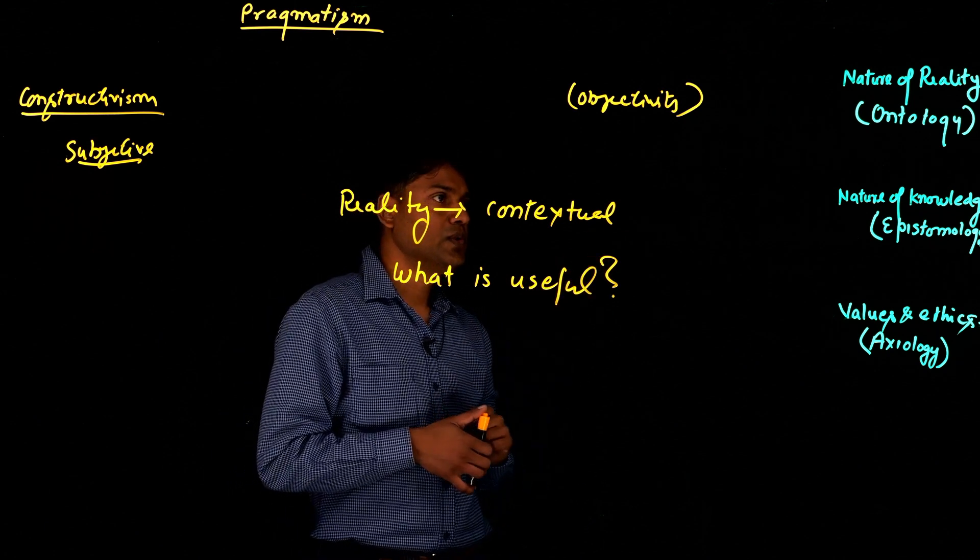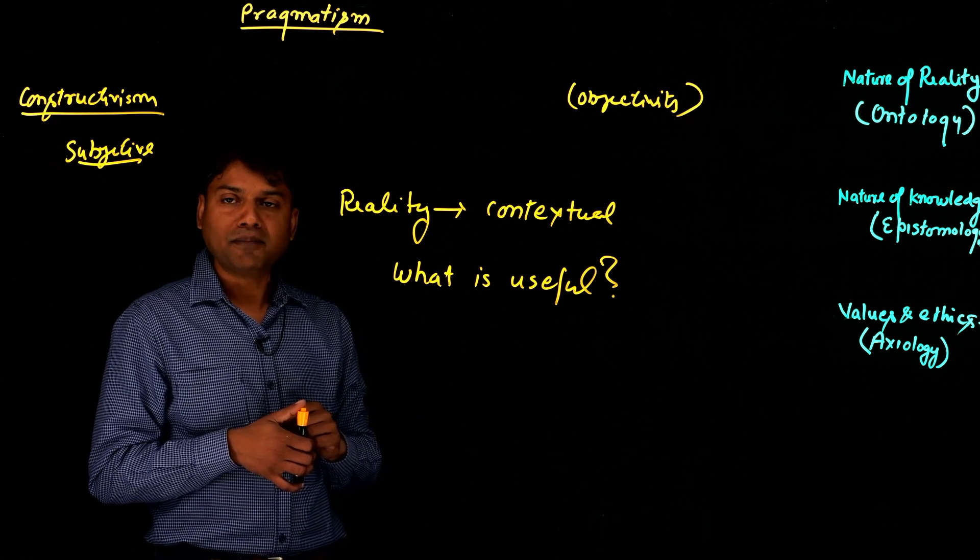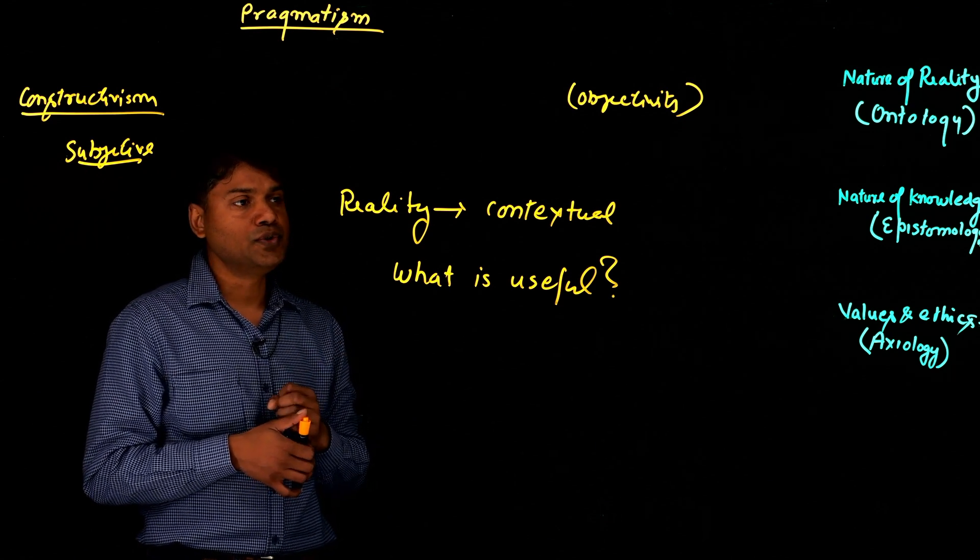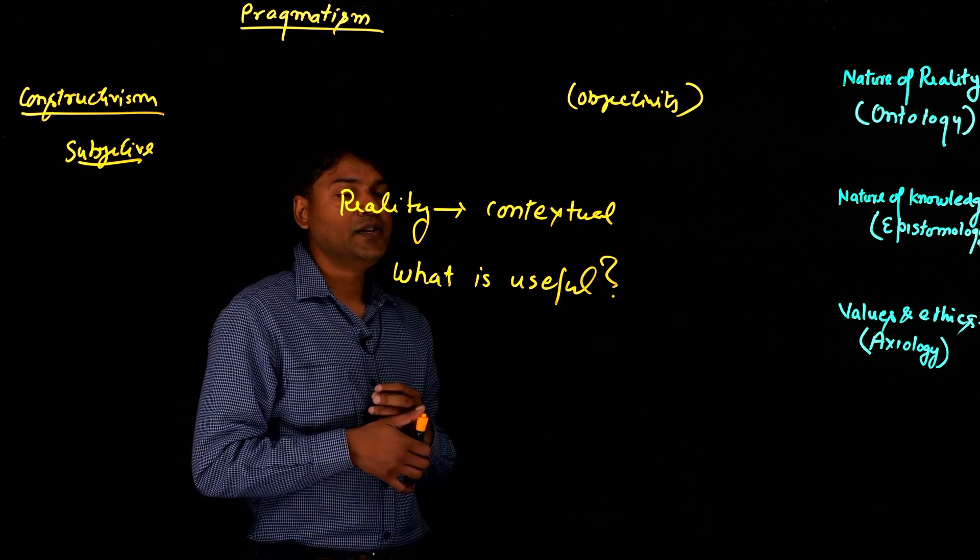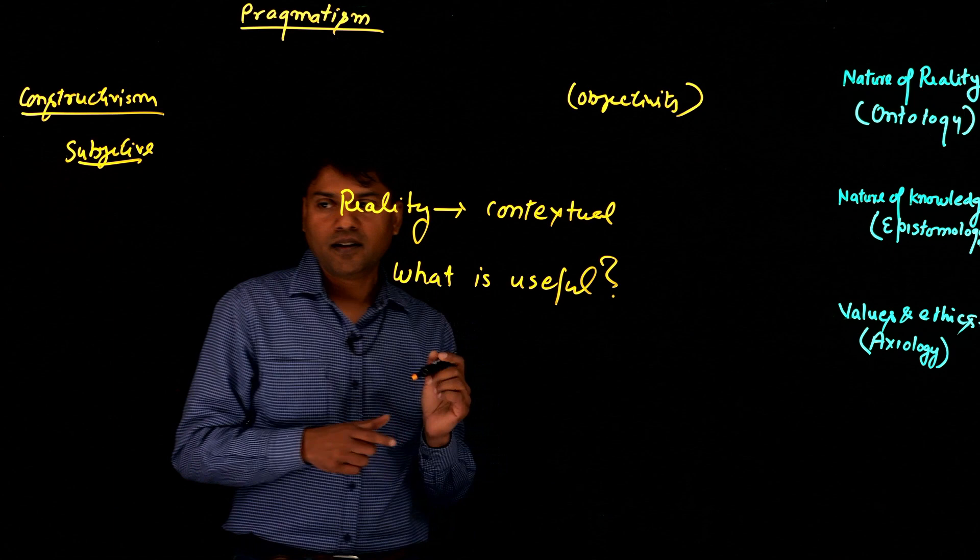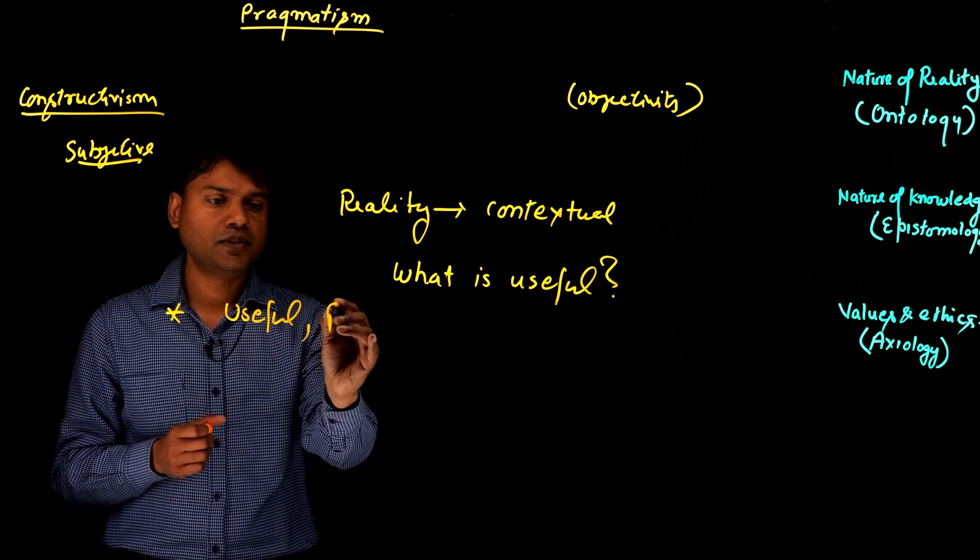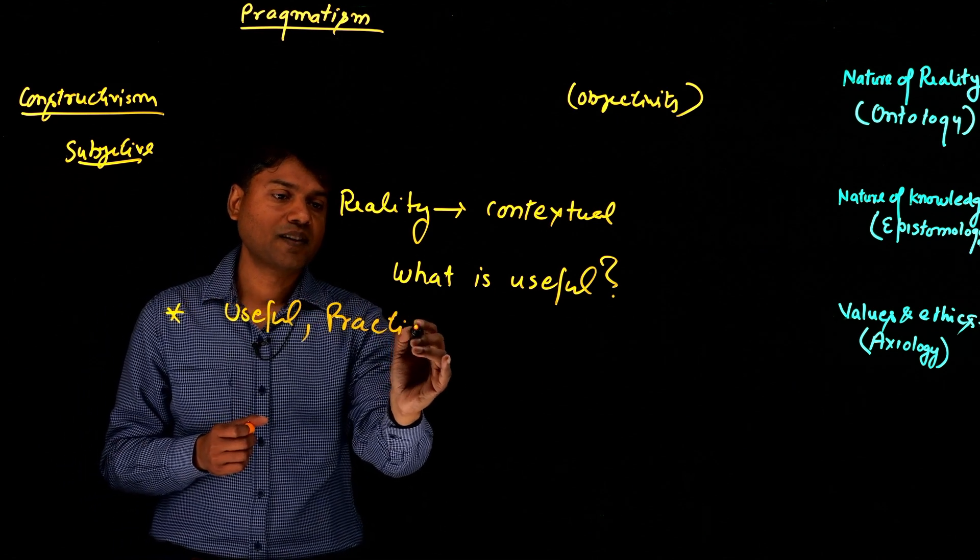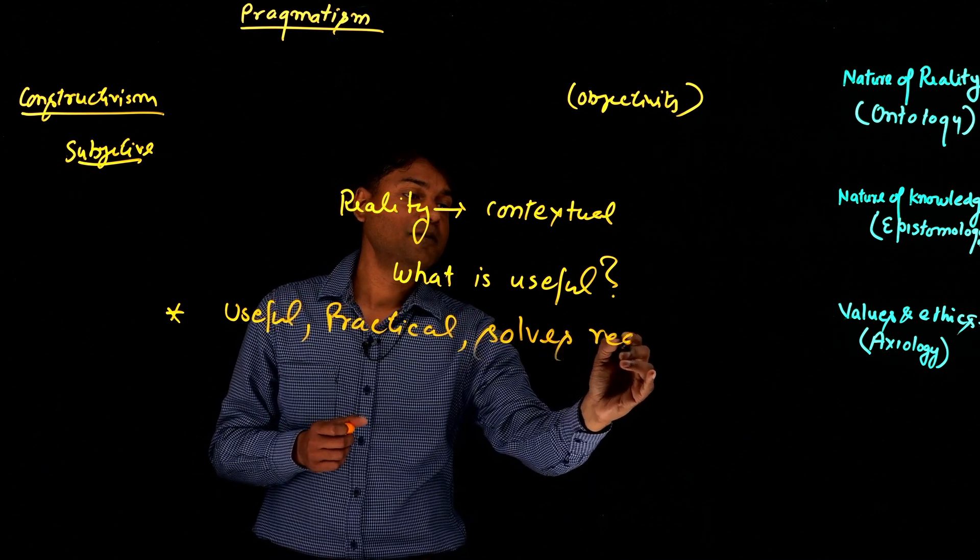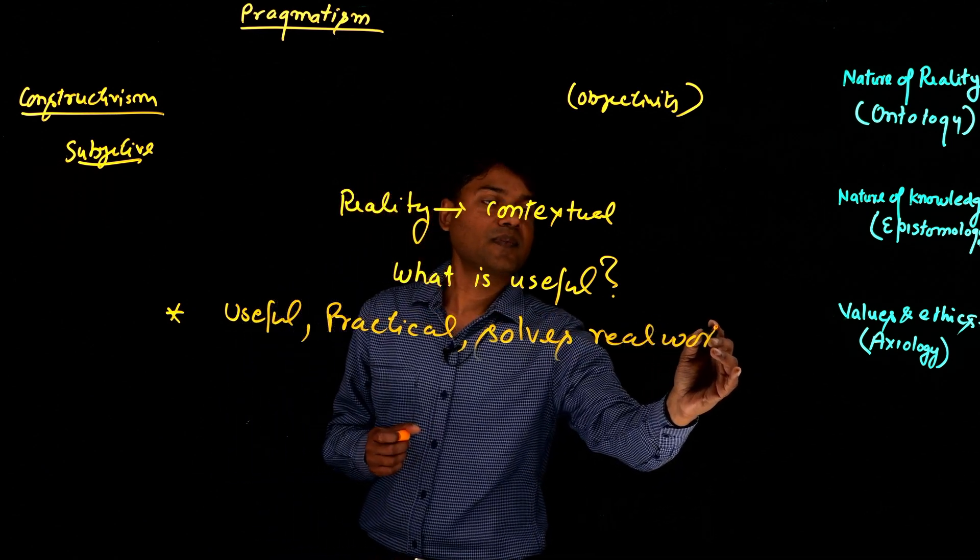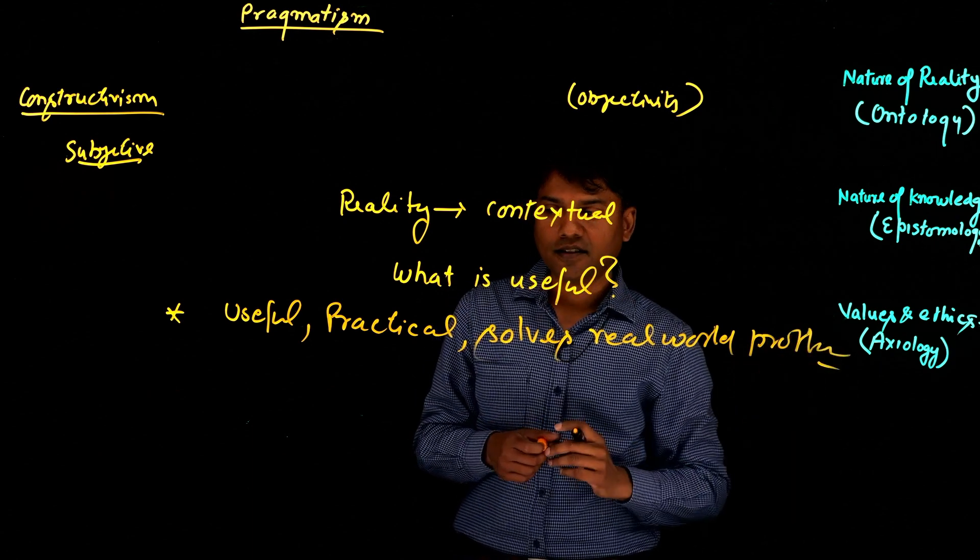Now let's switch to the nature of knowledge. For pragmatists, as I said previously, they are more focused on the usefulness, the practical side of knowledge. So the nature of knowledge, they say, knowledge is what which is useful, which is practical, which solves real-world problems.